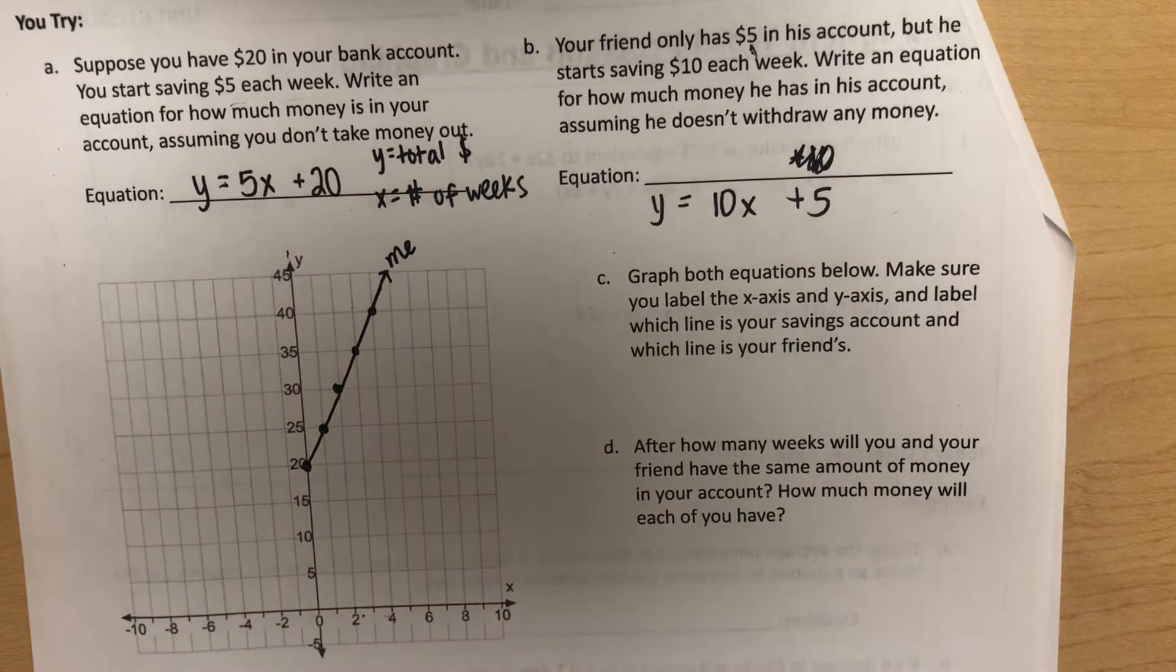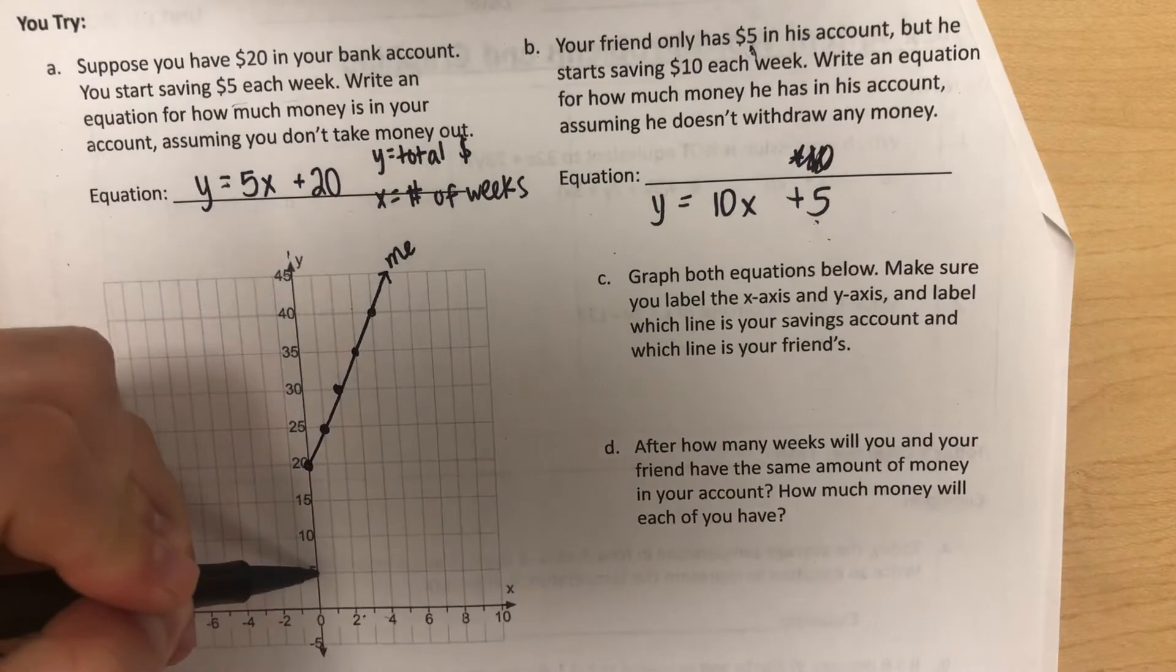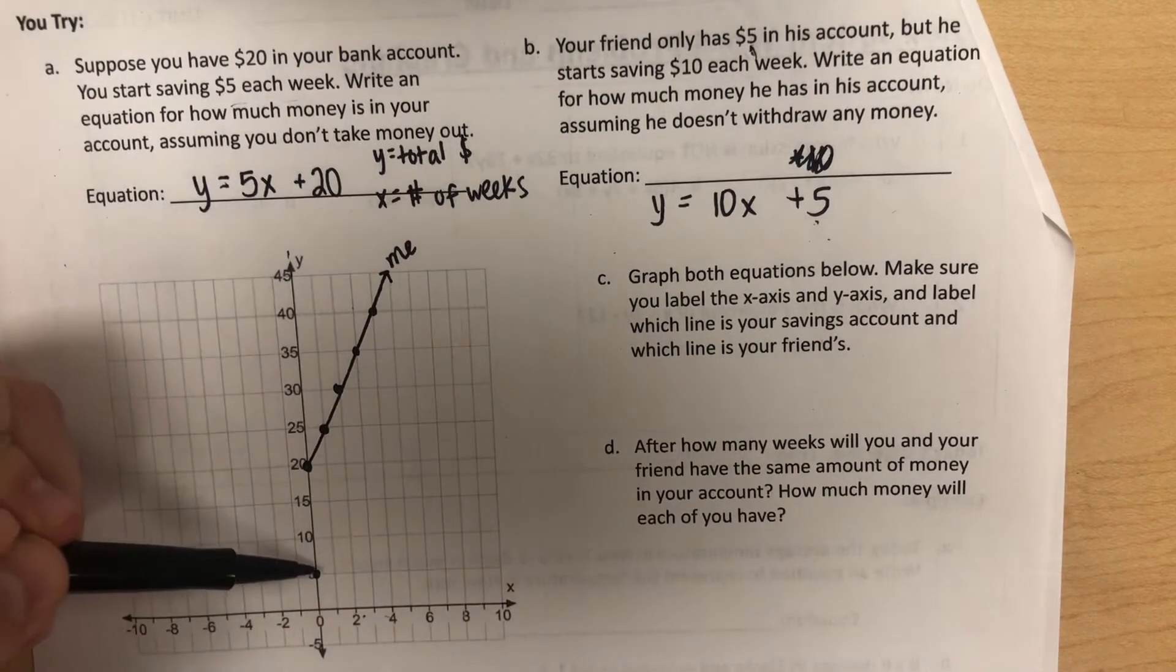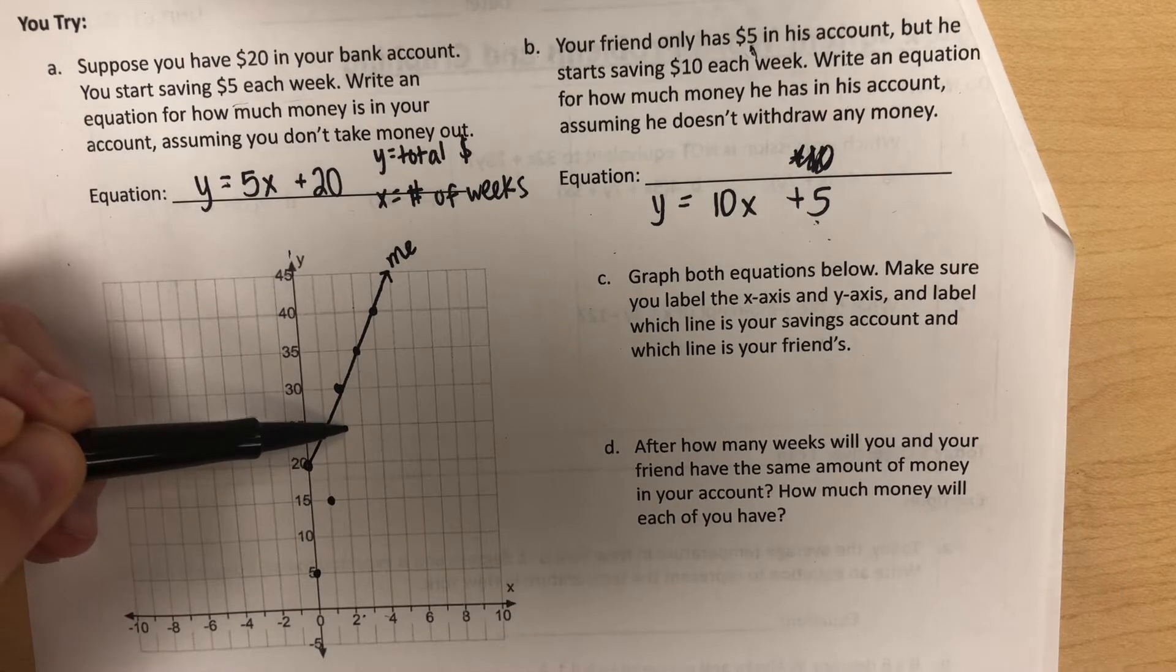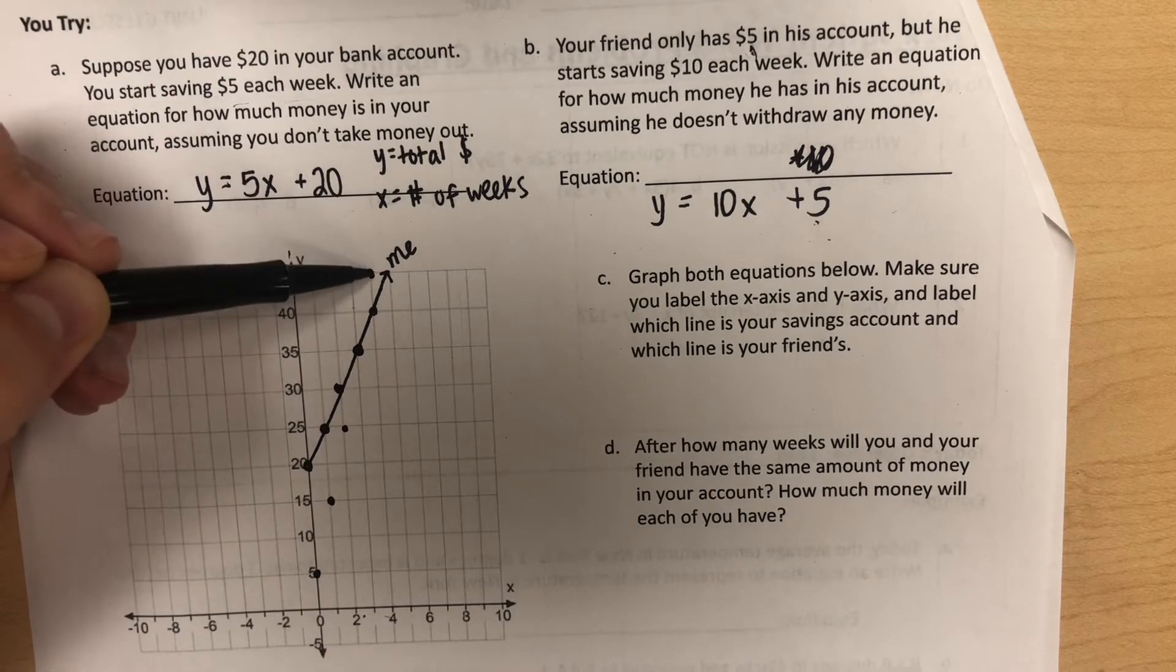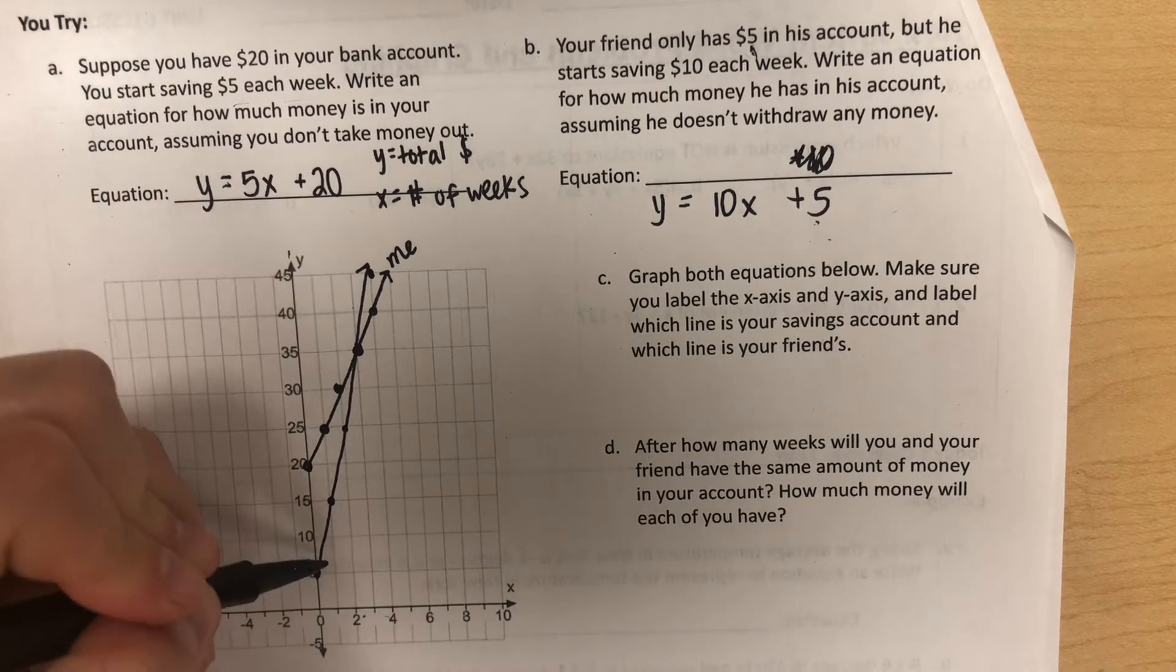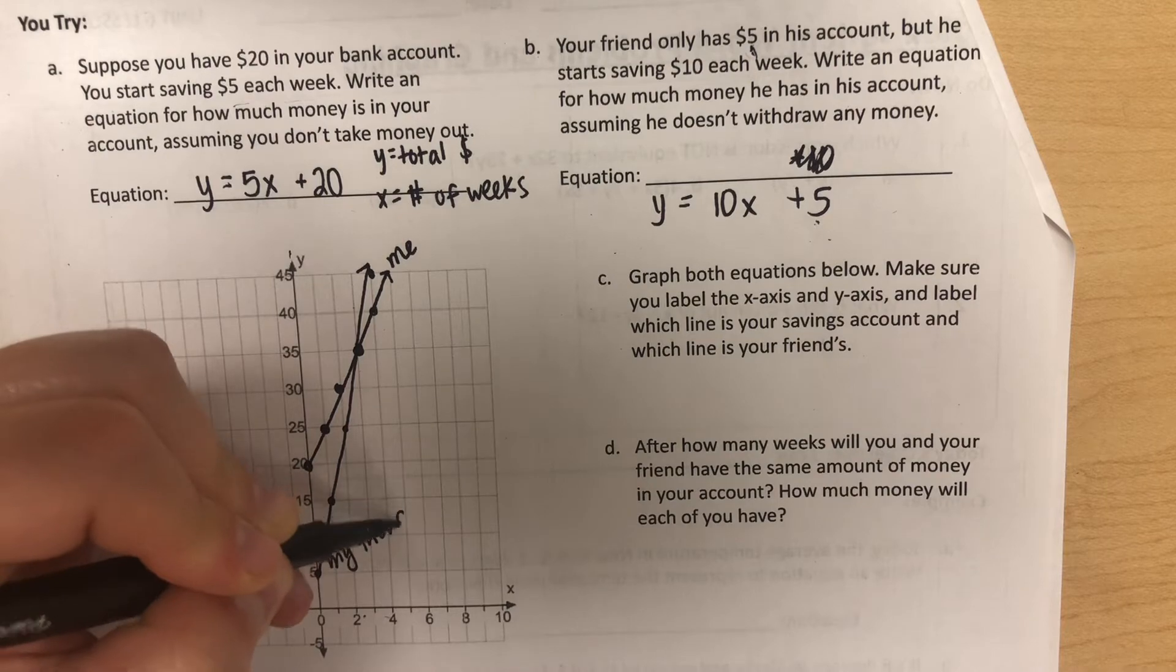The second part is our friend's savings account. We're starting at $5, and then we're saving $10 each week, so I want to go up $10 each week. And we get this line here. I can label this line as my friend.